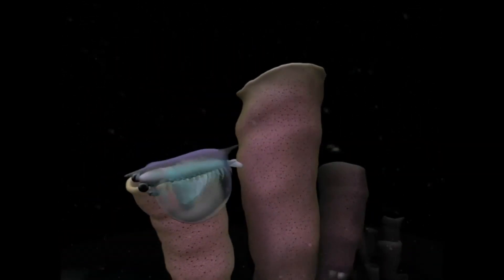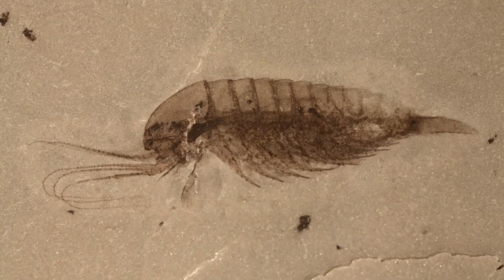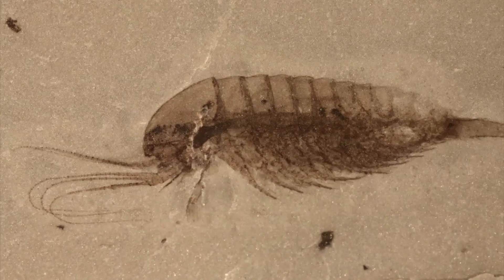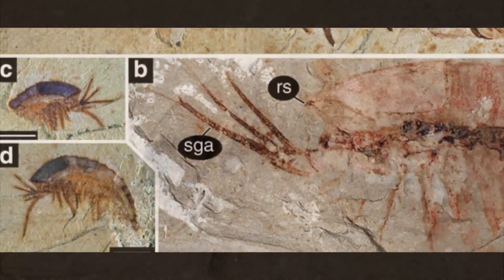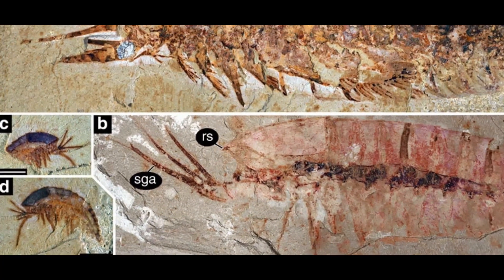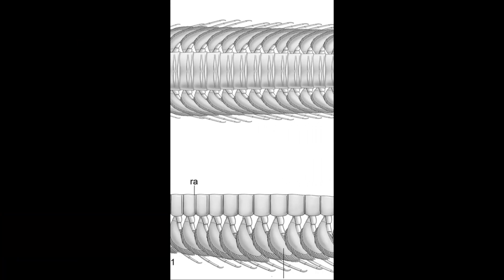By having a carapace, Isoxys achieved two things. First, they increased the number of eggs not eaten by predators. Second, they ensured their offspring reached a stage of development where they were able to survive on their own. The head shield of megacheirans, or cephalon, had a similar purpose: it protected their eggs until they hatched, becoming miniature versions of the adults.